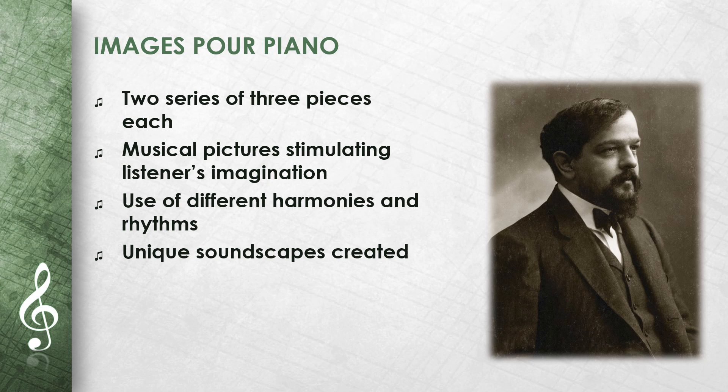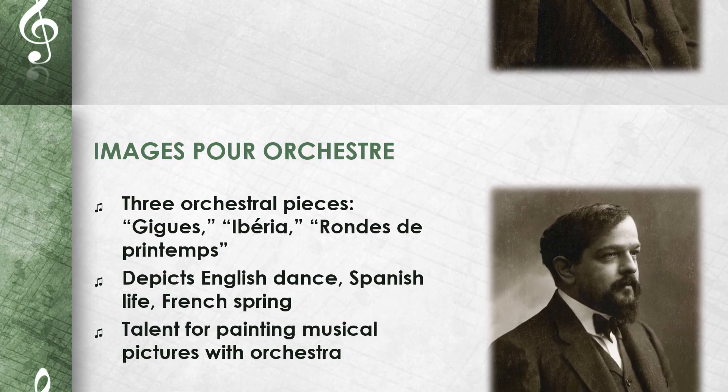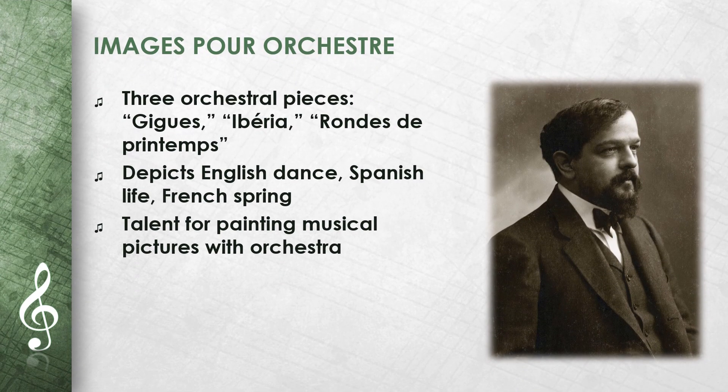Debussy used different harmonies and rhythms to create unique soundscapes. Images pour orchestre consists of three orchestral pieces: Gigues, Ibéria, and Rondes de Printemps.